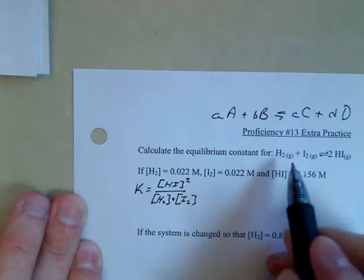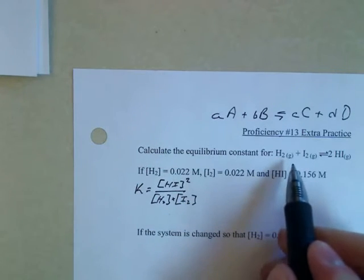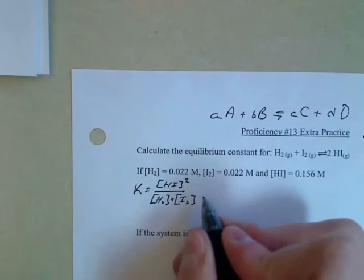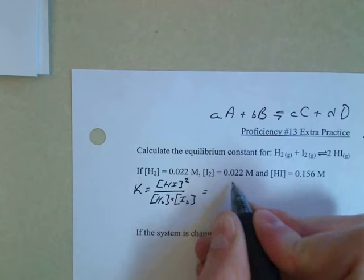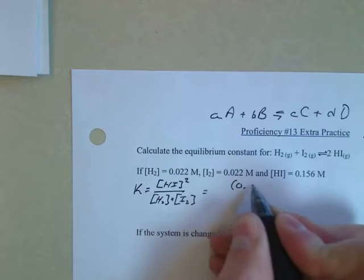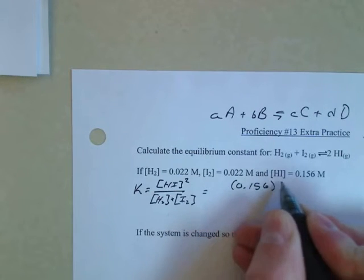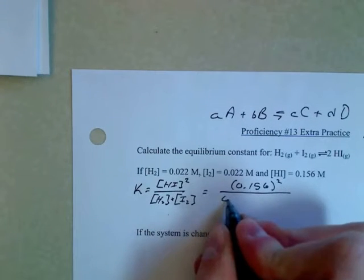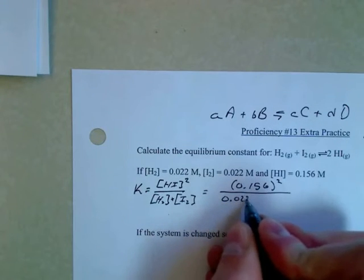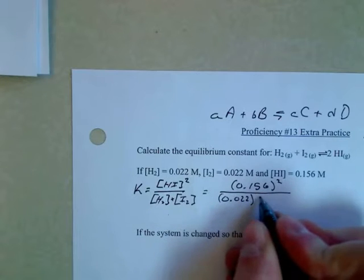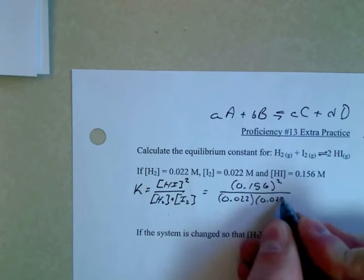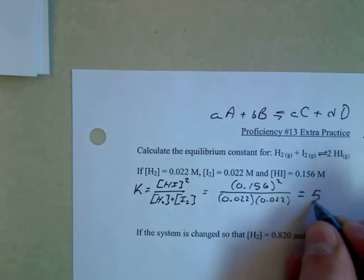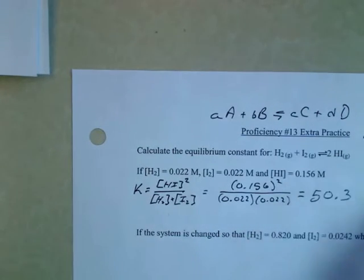Now it's a common misconception here to try to square these, but it's only for coefficients, not for the subscripts. So you plug all those numbers in and you're going to get 0.156 squared over 0.022 times 0.022. So you do all that math out and you'll get your K equal to about 50.3.